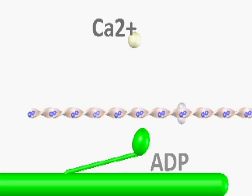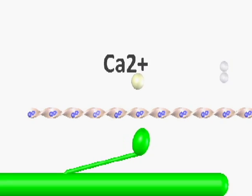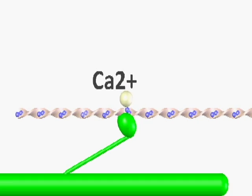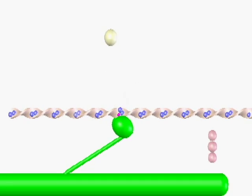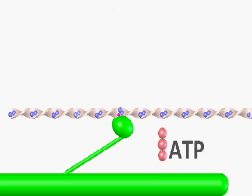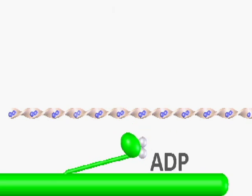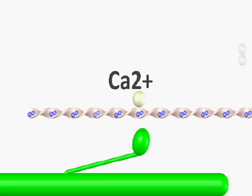When a muscle gets the signal to contract, calcium enters the sarcomere and reveals a binding site on a thin filament called actin. Myosin heads bind to the site and bend, causing the myosin fibril and the actin filament to slide across each other, resulting in the shortening of the sarcomere. When this happens to millions of sarcomeres in a muscle, the muscle contracts.